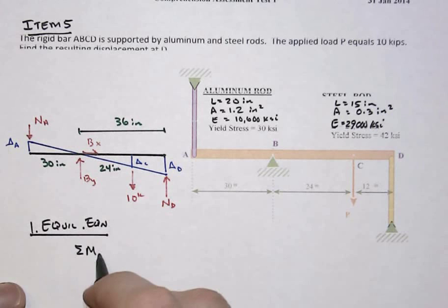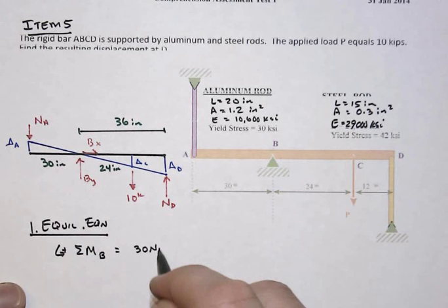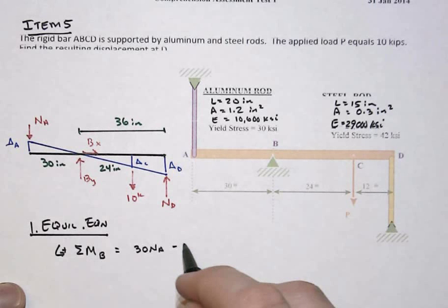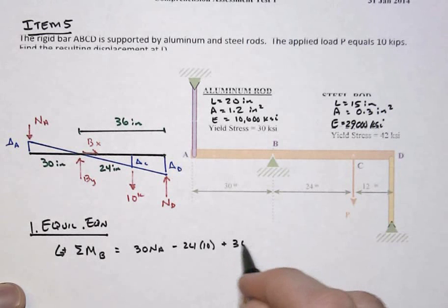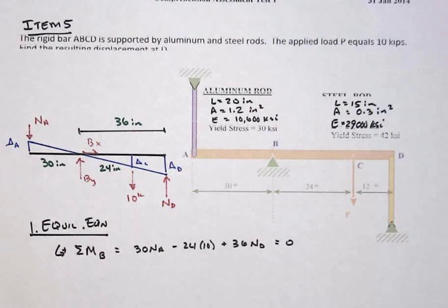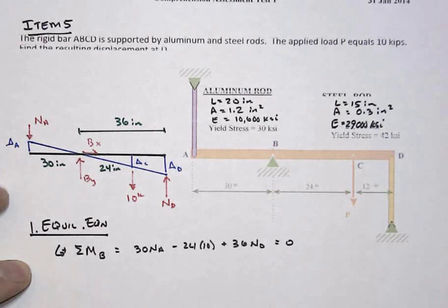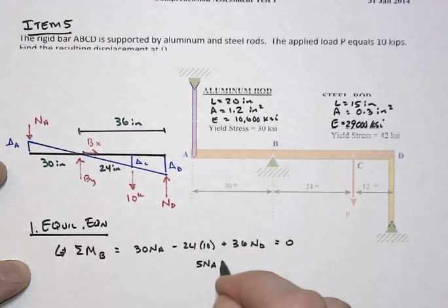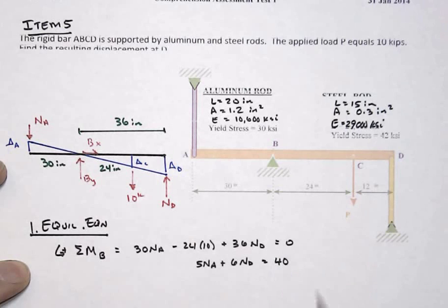Our first step is to write an equilibrium equation — the one that gets rid of BX and BY since we don't really need those. Sum of moments about point B, using counterclockwise as positive: 30 times NA minus 24 times our 10 kip load plus 36 times ND equals zero. Dividing through by 6 gives us 5NA plus 6ND equals 40.